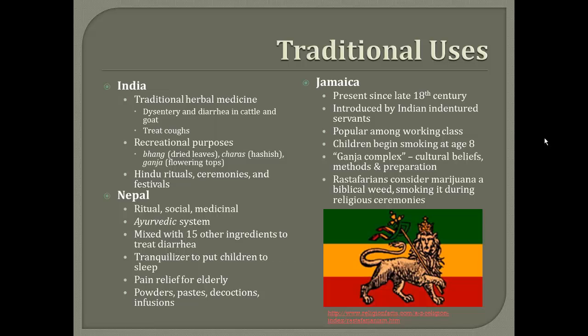In the late 18th century, Indian indentured servants came to Jamaica and introduced Cannabis sativa to the working class. It's popular among the middle class today as well, who mainly focus on the psychoactive reactions. Children in Jamaica actually start smoking marijuana around the age of 8. Indian indentured servants also introduced the ganja complex, which is a set of cultural beliefs and methods of preparation around marijuana. One religious group in Jamaica, known as the Rastafarians, consider marijuana a biblical weed. They advocate a back-to-Africa movement and worship the former emperor of Ethiopia, Haile Selassie, and they also smoke it during their religious ceremonies.